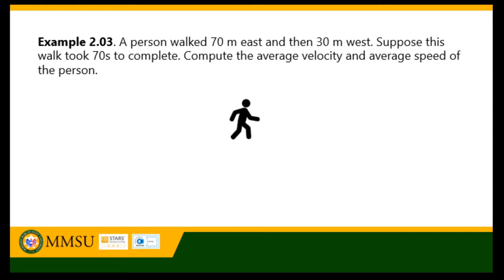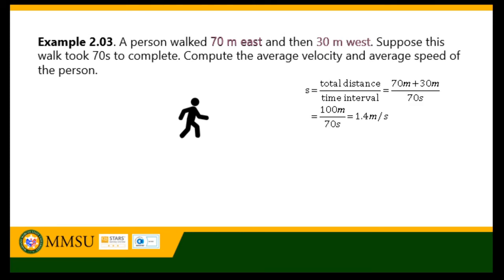The animation shows the movement of the person. Two movements were given: 70 meters east and 30 meters west. For average speed, disregard the direction of the two movements — that is, distance divided by total time: 70 meters plus 30 meters, all over 70 seconds, which equals 1.4 meters per second.